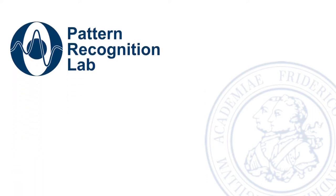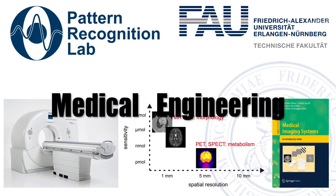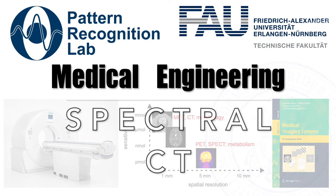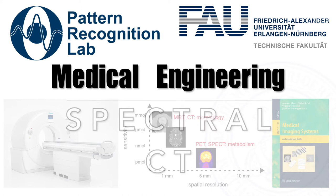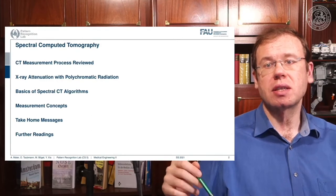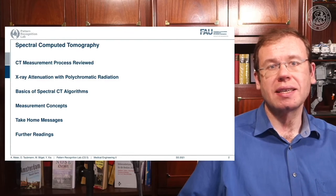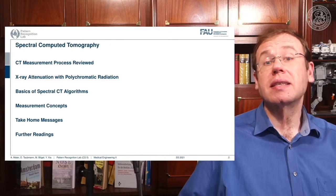Welcome back to Medical Engineering. Today we want to discuss the spectral properties of x-rays and how they can be incorporated into the CT reconstruction process. Today's topic will be spectral CT. We'll give a short refresher about the measurement process and the different energies involved, then discuss the properties that emerge, like polychromatic radiation and its effects, the basics of spectral CT algorithms, and the different measurement concepts used in practice.